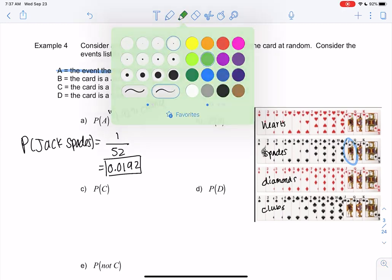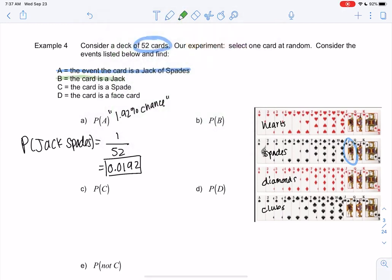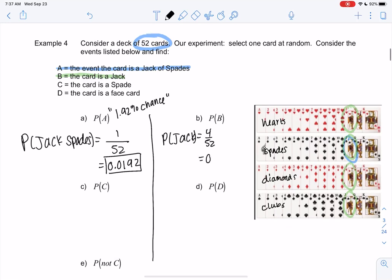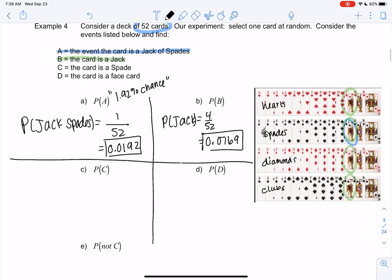All right, so event B. What's the event that we just get a jack? So a jack would be any of the Js. 1, 2, 3, 4. So probability of a jack will be 4 out of 52, because there's 4 of them. So 4 out of 52, quick division, brings me to 0.0769.